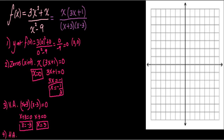For the horizontal asymptote, I look at the degrees. The degrees are equal — both 2. When the degrees are equal, the horizontal asymptote is the leading coefficient of the numerator divided by the leading coefficient of the denominator, which is 3 over 1. So the horizontal asymptote is y = 3.